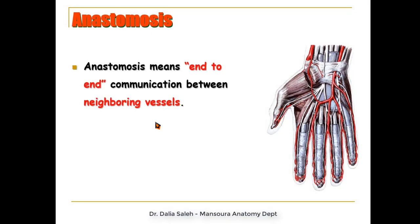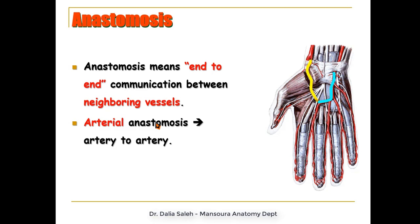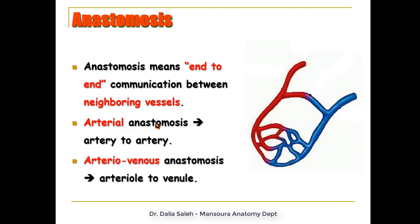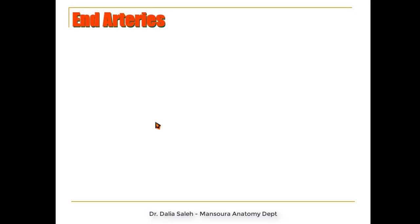Anastomosis means end-to-end communication between two neighboring vessels. For example, there is end-to-end anastomosis between the radial and ulnar arteries in the hand. Sometimes, as with anastomosis between the coronary arteries supplying the heart, the communication is through capillaries. There is also another type called arteriovenous anastomosis, between arteries and veins.